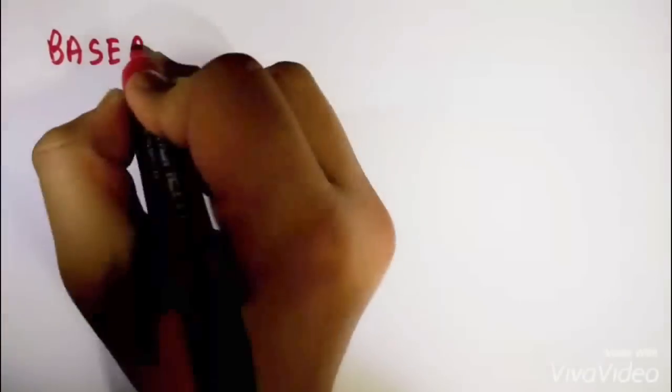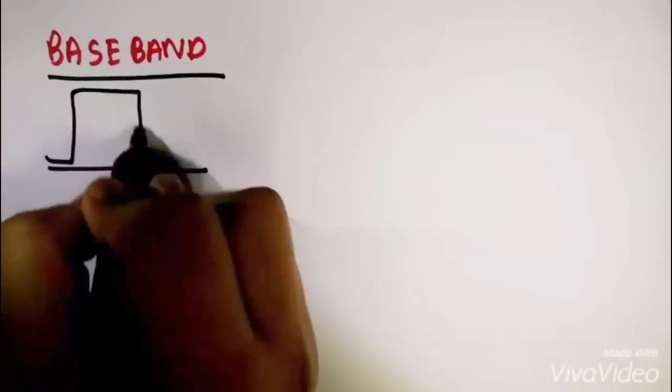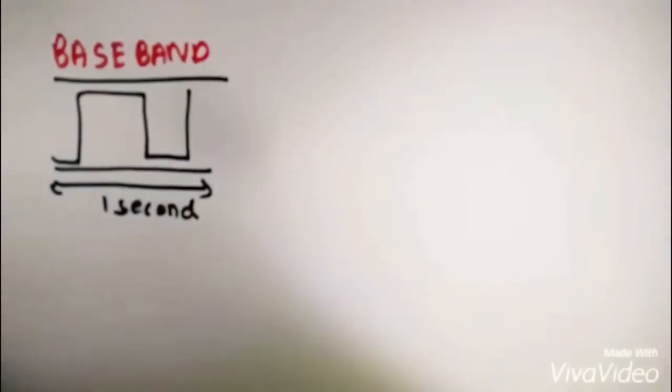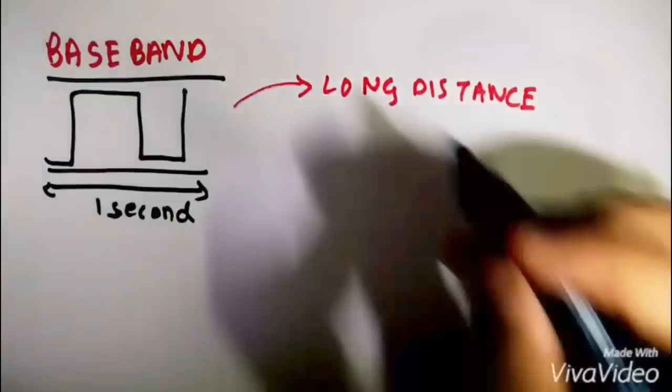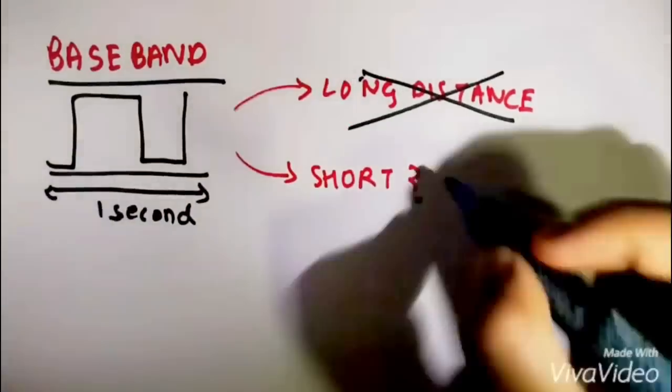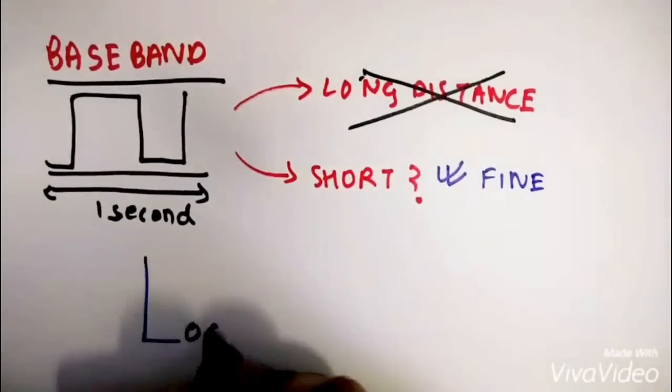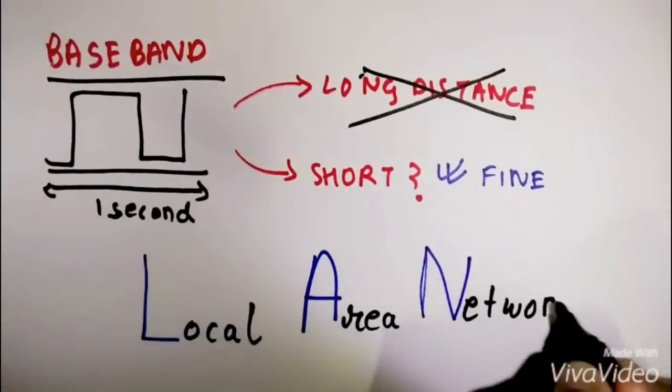The usage depends on the conditions for transmission. Baseband uses very low frequency waves which can deteriorate over long distances. Hence they are used for short distance communications like communications over a local area network or LAN like Ethernet.